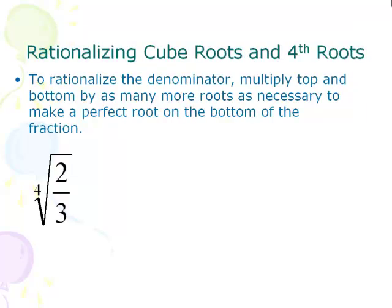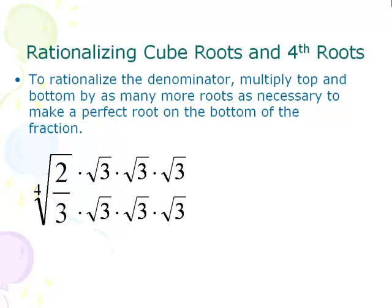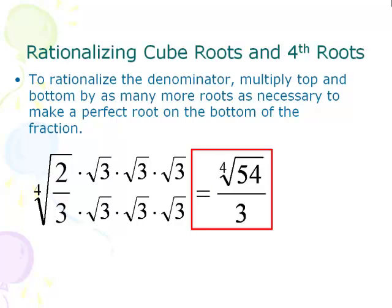When you are rationalizing cube roots, 4th roots, and 5th roots, the same idea applies, but you have to have a total of however many your root is. Here our root is a 4th root, so I have to multiply by enough 3s to create a group of 4 of them. I have one 3 on the bottom right now, so I multiply by 3 more 3s on the bottom and the same to the top. 2 times 3 times 3 times 3 gives us the 4th root of 54 on top, and we have a complete group of four 3s on the bottom, which eliminates the 4th root, leaving just 3. Final answer: 4th root of 54 over 3.